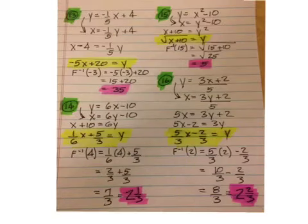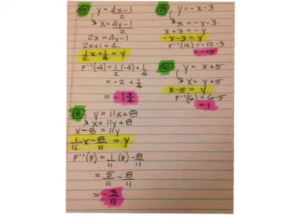Thirteen is 35, fourteen is two and a third, fifteen is five, and sixteen is two and two-thirds. Seventeen is negative one and three-fourths, eighteen is negative three over eleven, nineteen is negative fifteen, and twenty is one.